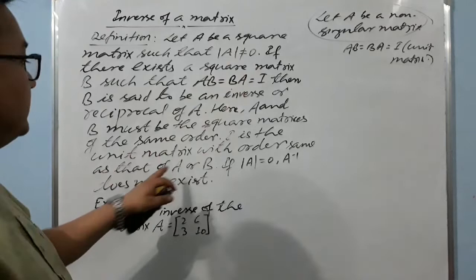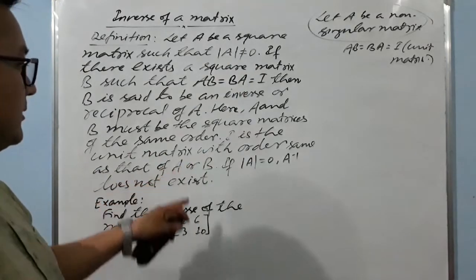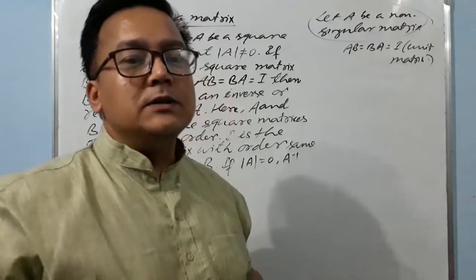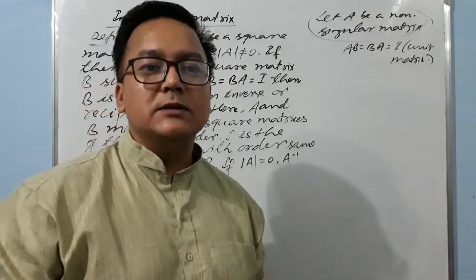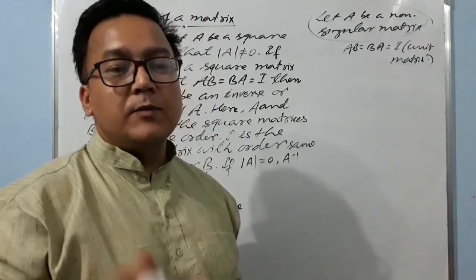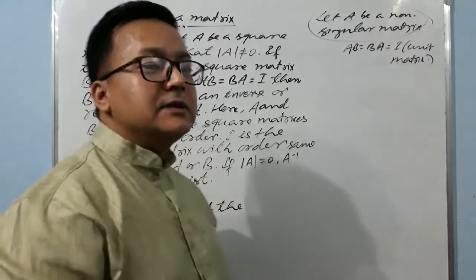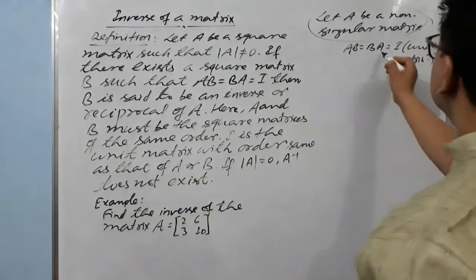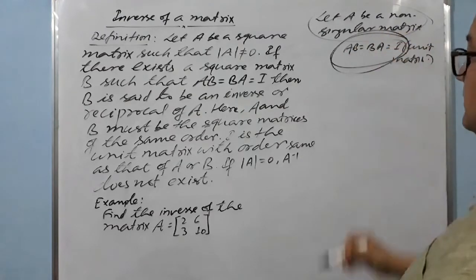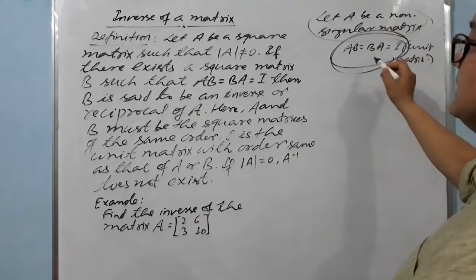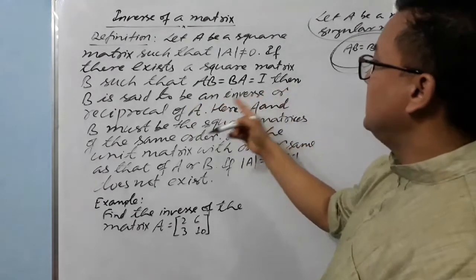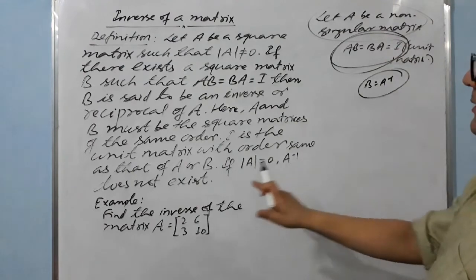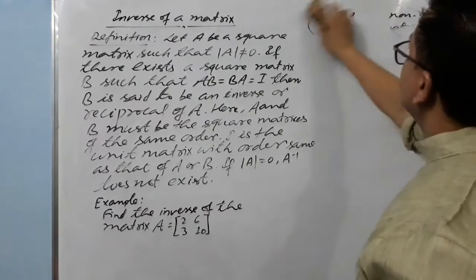I is the unit matrix of the same order as A and B. If the determinant of A equals zero, then A inverse does not exist — we cannot find the inverse of that square matrix. In order to find the inverse, the square matrix must be non-singular, meaning its determinant should not be equal to zero. If AB equals BA equals I, we can say B is the inverse of A, represented as A⁻¹.